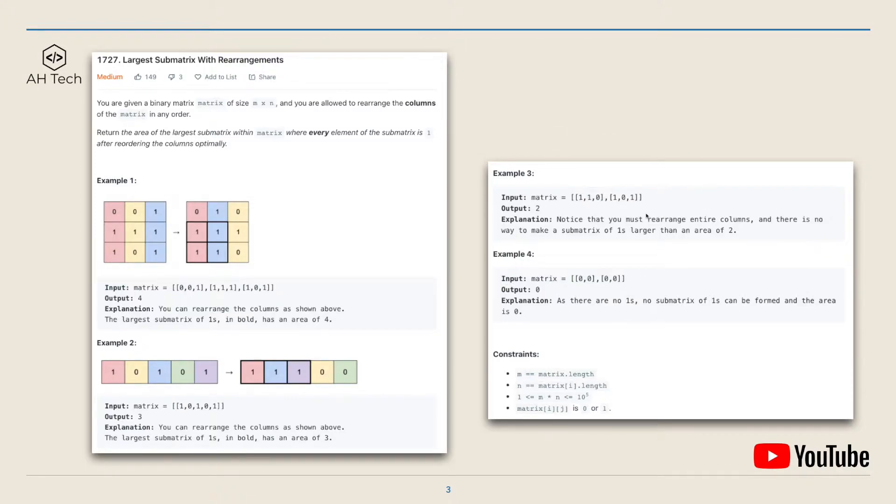And in example 3, the largest sum matrix we can get has area of 2. And in example 4, since there's no 1 in the input matrix, so the largest sum matrix we can get has area of 0.